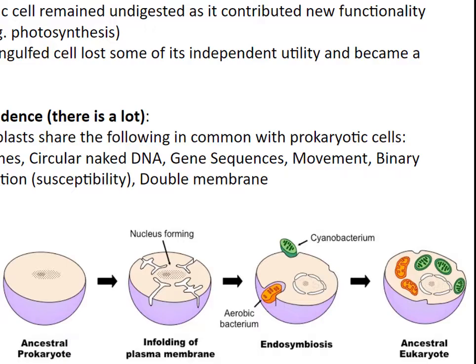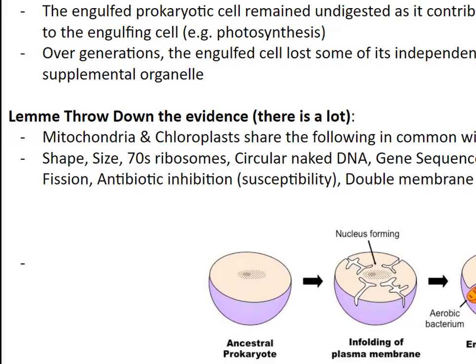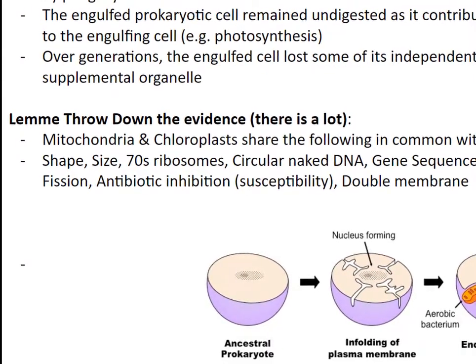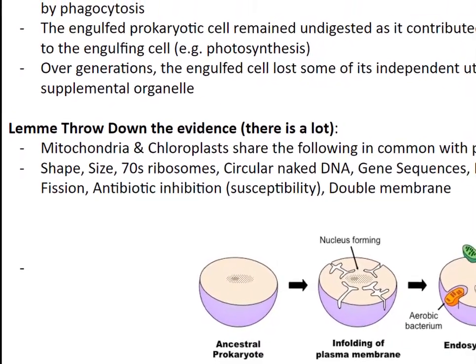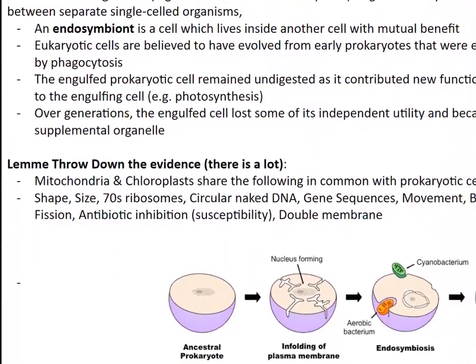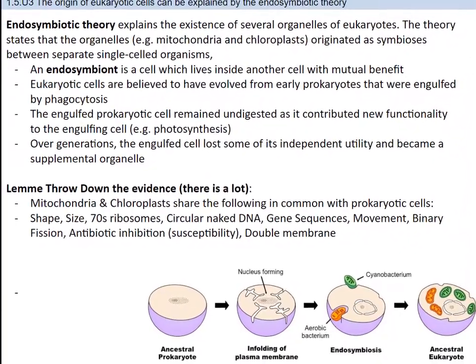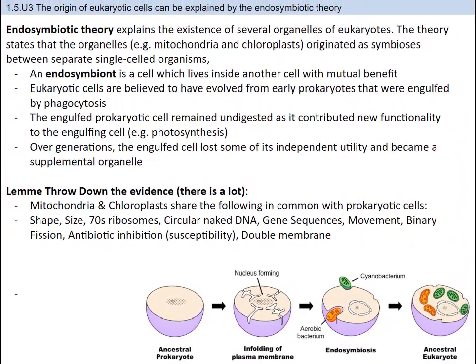For both chloroplasts and mitochondria, they have a number of similarities in common with prokaryotic cells. In addition to a similar size and shape, they have 70S ribosomes, circular naked DNA, gene sequences, movement, binary fission, susceptibility to antibiotics, and a double membrane. You can see in the image at the bottom right how phagocytosis could have occurred, incorporating a cyanobacteria that gave rise to a chloroplast, or an aerobic bacteria that gave rise to a mitochondria.